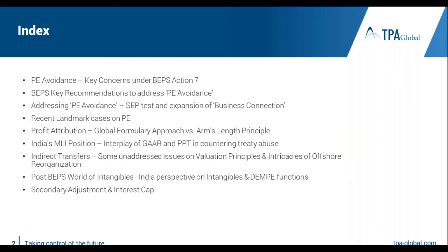We will talk about BEPS developments by way of reservations expressed by India, and also changes that have occurred in domestic law seen as implementing BEPS measures. We will discuss recent landmark cases on permanent establishment. India triggered off its General Anti-Avoidance Rule on April 1, 2018, which largely coincides with implementation of BEPS recommendations.